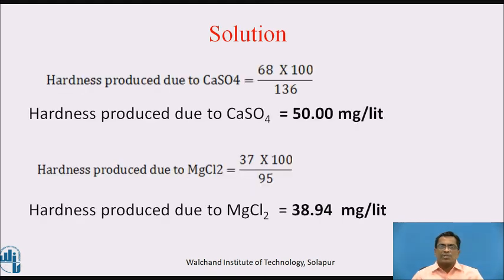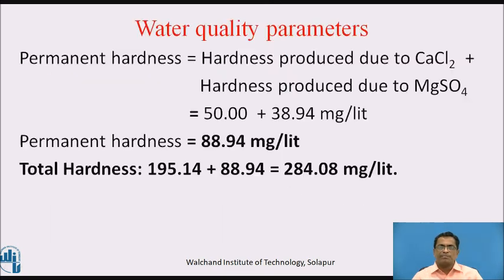Hardness due to calcium sulphate = 68 × 100 ÷ 136 = 50 mg/L. Hardness due to magnesium chloride = 37 × 100 ÷ 95 = 38.94 mg/L. Permanent hardness = 50 + 38.94 = 88.94 mg/L. Total hardness = 195.14 + 88.94 = 284.08 mg/L.